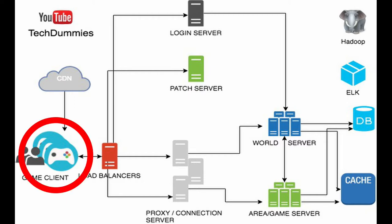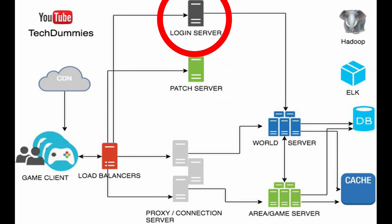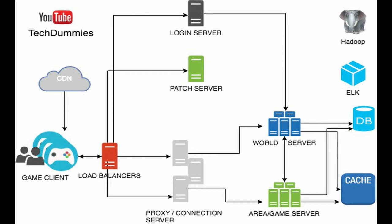First, the clients connect to the patch server to make sure their applications are updated. If not, they download the patch and update themselves. In the second step, they connect to the login server and check credentials against the database. In the third step, players connect to the world server, which then pairs them together with other players using Redis or a database or any other persistent system that records the entry of players who want to play the game.